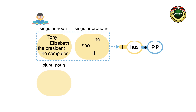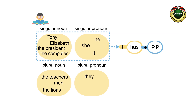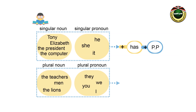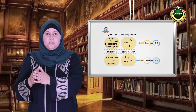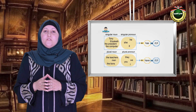we must use has plus the past participle of the verb. If the subject is a plural noun such as the teachers, men, the lions, etc., or the following pronouns — they, we, you, and I — we must use have plus the past participle of the verb.